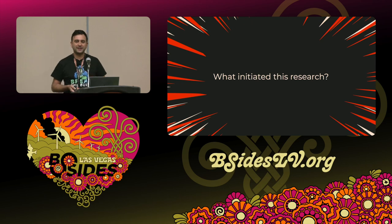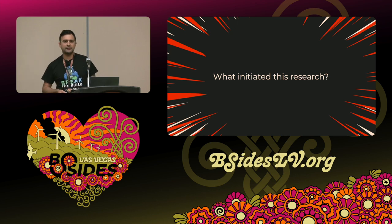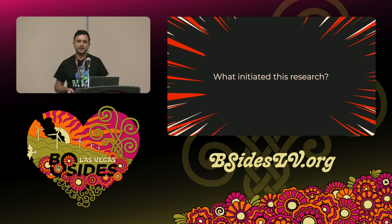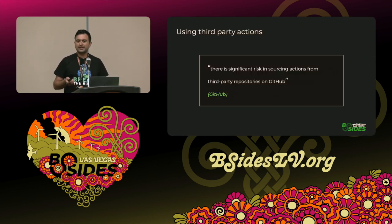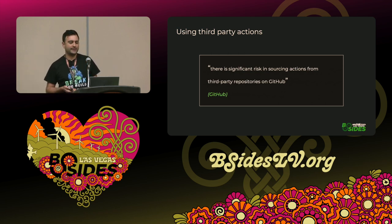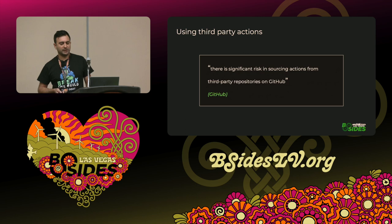What initiated this research is actually me analyzing and going over build logs of public projects — it's a hobby of mine, don't judge. I noticed a phenomenon where a benign action developed by an unknown developer basically has full-blown permissions against the repository, and I wanted to see exactly what is the root cause and why it is so widespread. So let us begin with a quote by GitHub which states: 'There is significant risk in sourcing actions from third-party repositories on GitHub.' Let's see how GitHub users handle this warning.